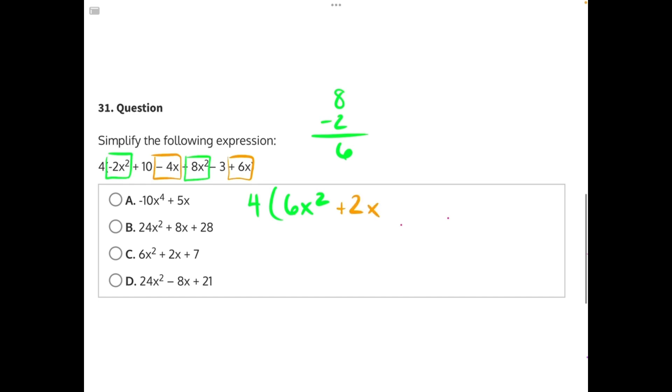Our final pair of like terms is positive 10 and negative 3. 10 minus 3 would give us a positive 7. And now we are ready to use distributive property.